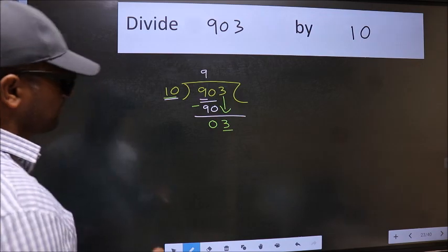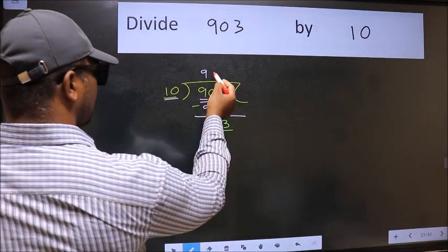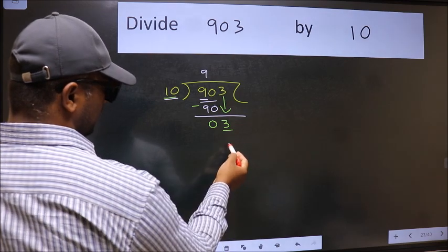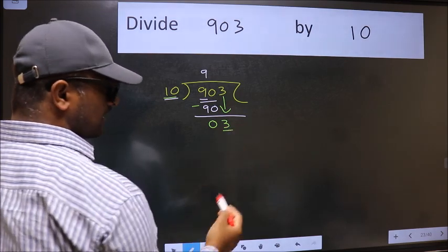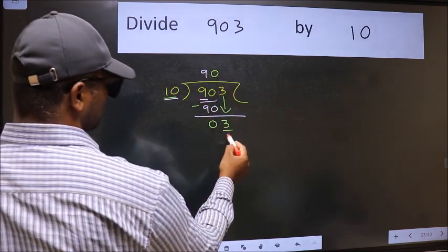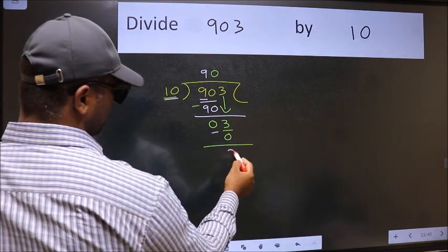Instead of that, what you should think of doing is, which number should we take here. If I take 1, we will get 10. But 10 is larger than 3. So what we should do is, we should take 0. So 10 into 0, 0. Now we should subtract. We get 3.